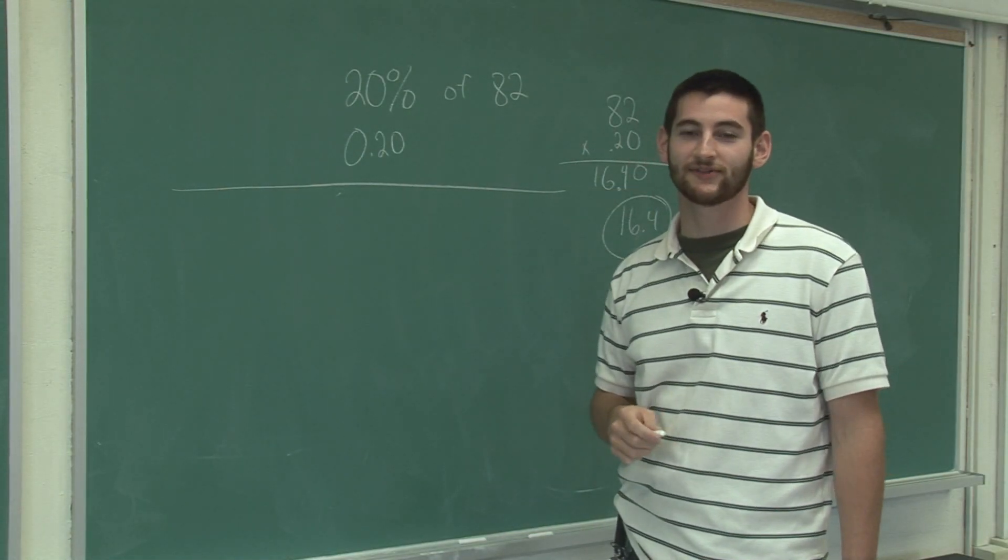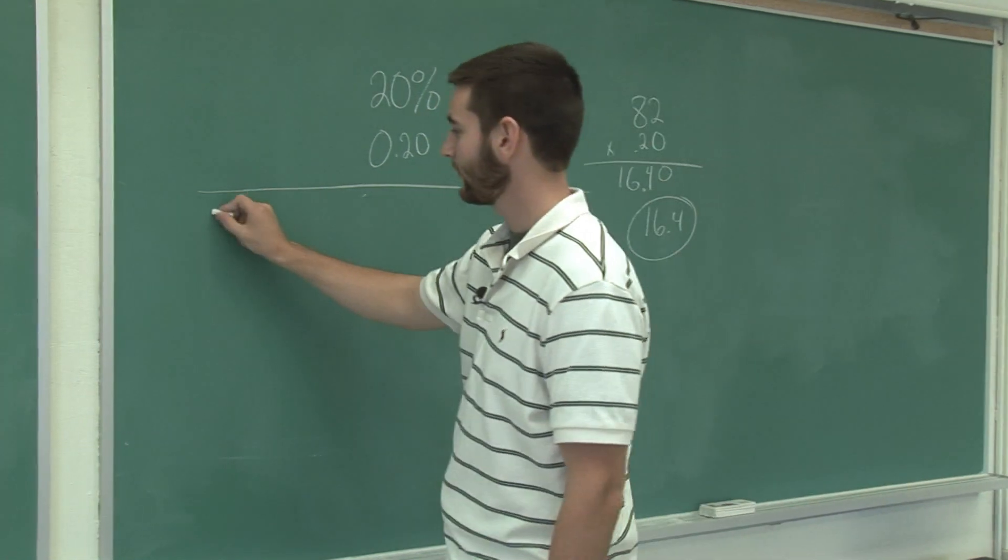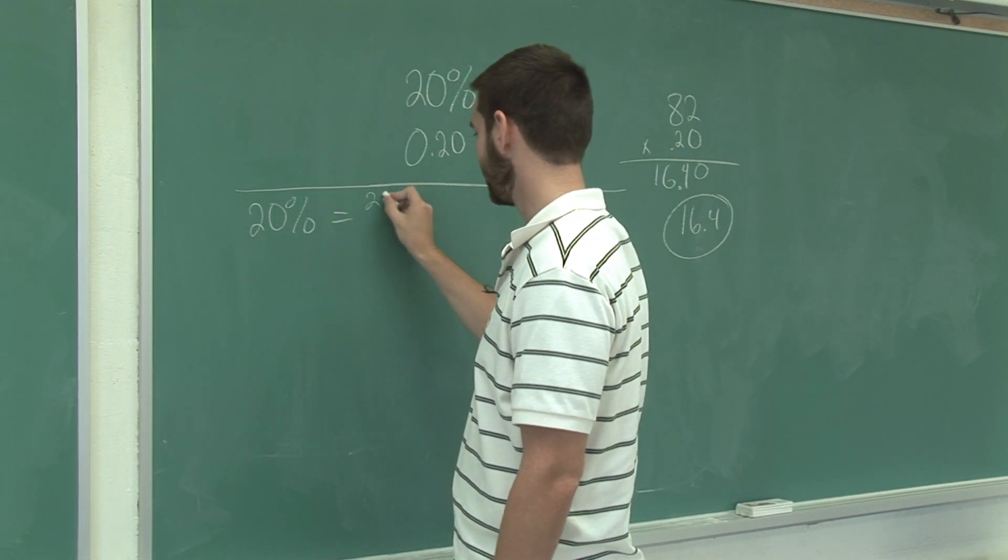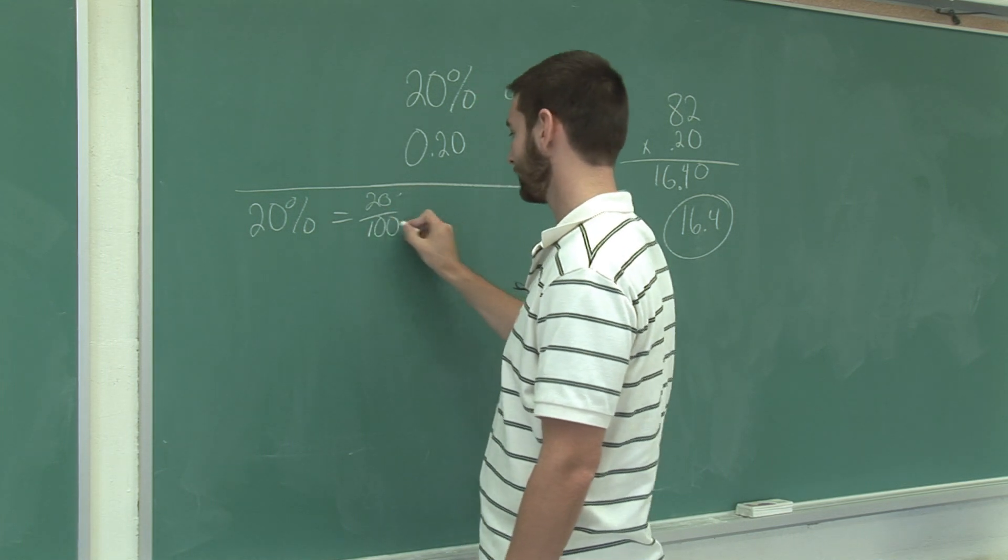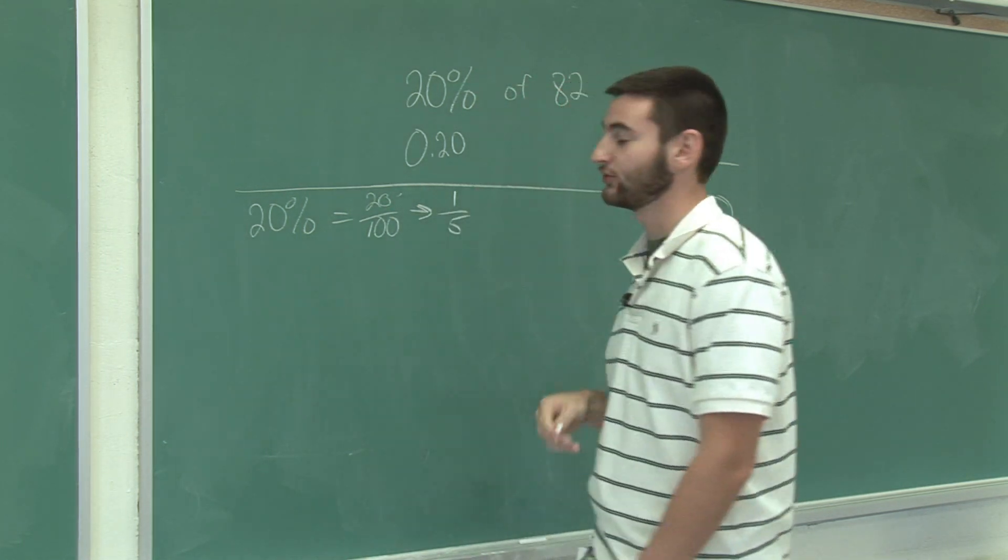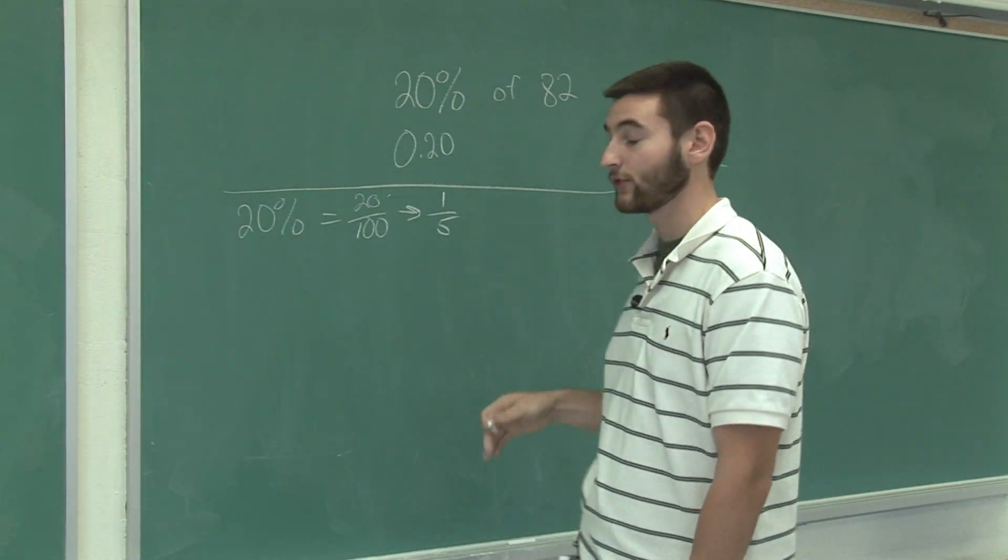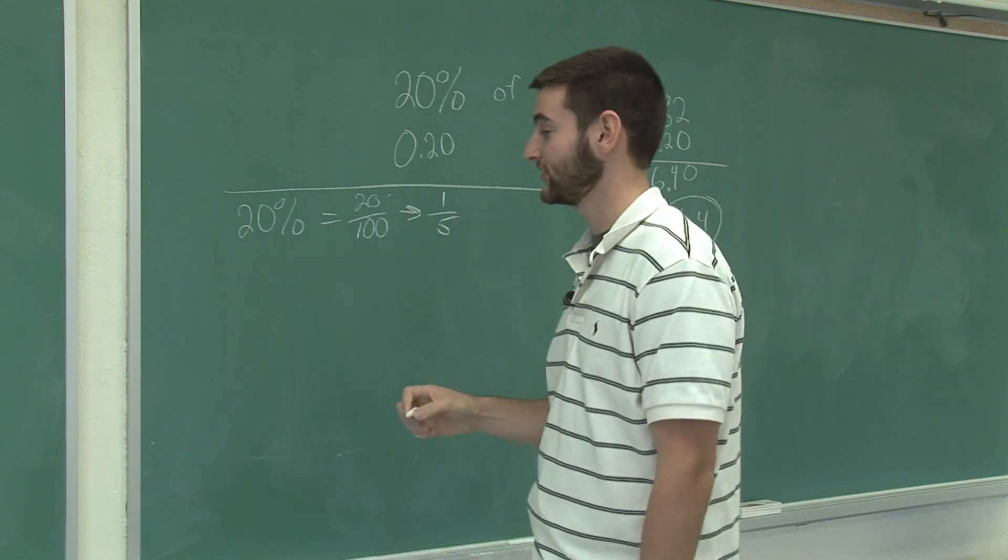Okay, now we're going to do the same example using a different method. 20 percent is equal to 20 over 100, and that's equal to 1 fifth. So, to find 20 percent of 82, we could just divide 82 by 5, or multiply by 1 fifth, which is the same thing.